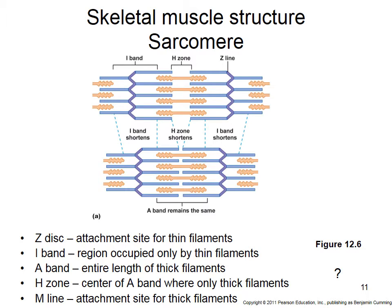The M line is in the middle of the sarcomere — it's the attachment site for the myosin molecules. The Z line is at the attachment site for actin and ends the sarcomere. Z is at the end of the alphabet, M is in the middle. Each sarcomere has one M line and two Z lines, also called Z discs.